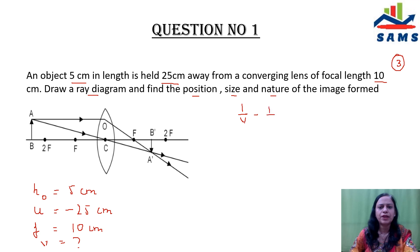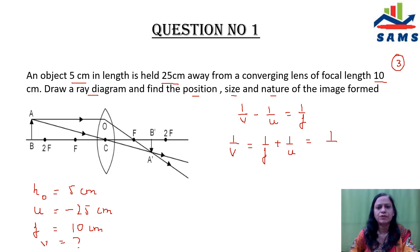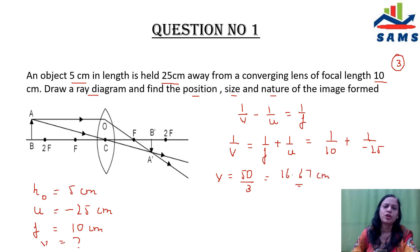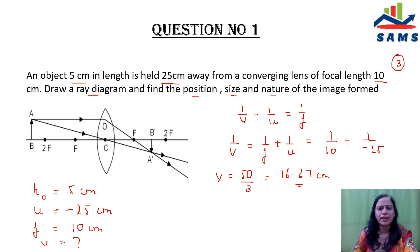Using the lens formula 1/v − 1/u = 1/f, we get 1/v = 1/f + 1/u, which becomes 1/10 + 1/(−25). Never forget to write the sign conventions while solving numericals — you have to apply them yourself. On solving, you get v = 50/3, which is also equal to 16.67 cm. A positive sign of v indicates the image is formed on the right-hand side, so the nature of the image is real and inverted.